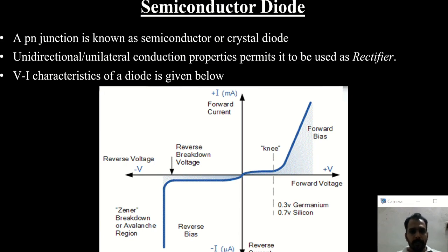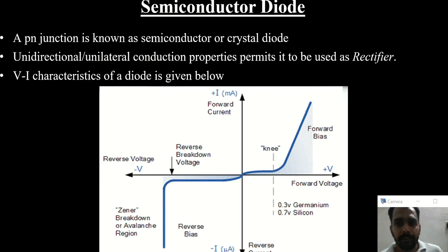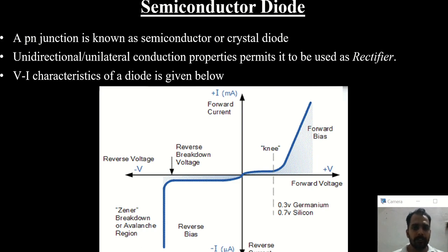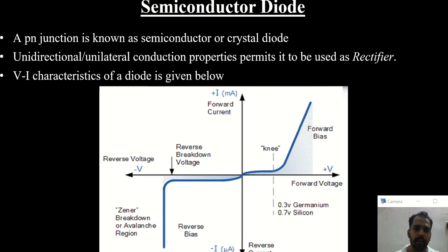In the last class we discussed about semiconductors, how we can make a diode, and how we can form an extrinsic semiconductor. Today we are going to rewind all those things and go into details of the diode characteristics and its uses.